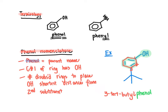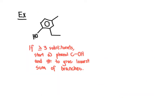Let's do another example that applies an additional rule for three or more substituents on the ring. Here we have a hydroxy group, an ethyl group, and a methyl group — three substituents. We start at the phenol carbon, which is carbon one by definition. To decide which direction to number the ring, we choose the direction that gives the lowest possible sum of the branch positions. Numbering counterclockwise gives positions one, two, and four — summing to seven.